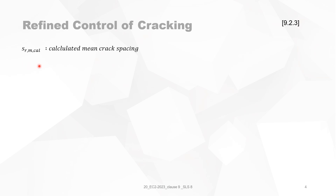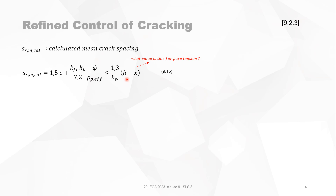SRM-cal is the calculated mean crack spacing, given by formula 9.14. There is a lower limit on the value of SRM-cal, which is a function of h minus x. If you are in pure tension, then x is minus infinity, meaning this lower limit disappears because every value on the left-hand side of the equation will fulfill the inequality.